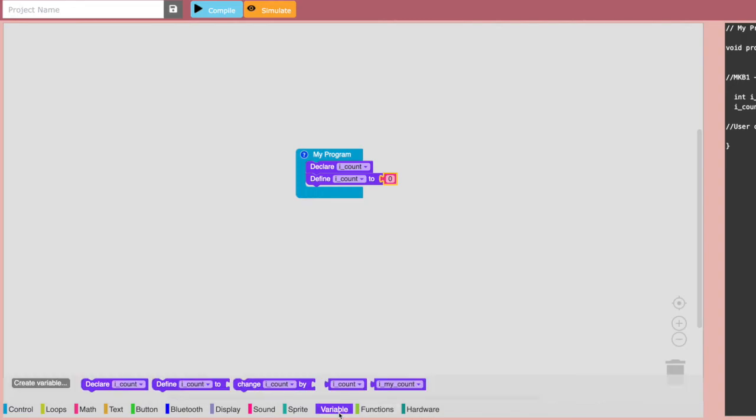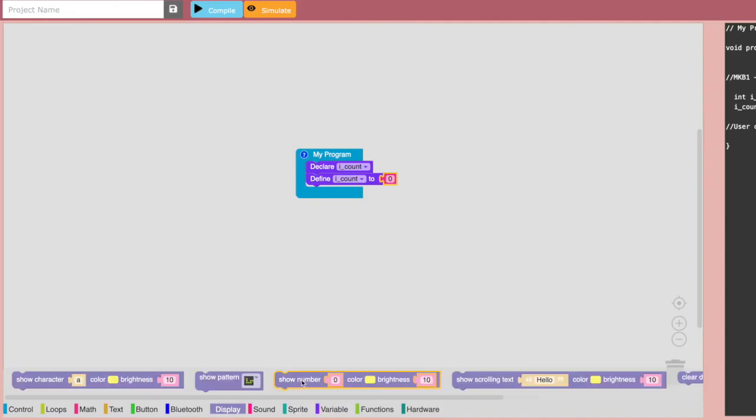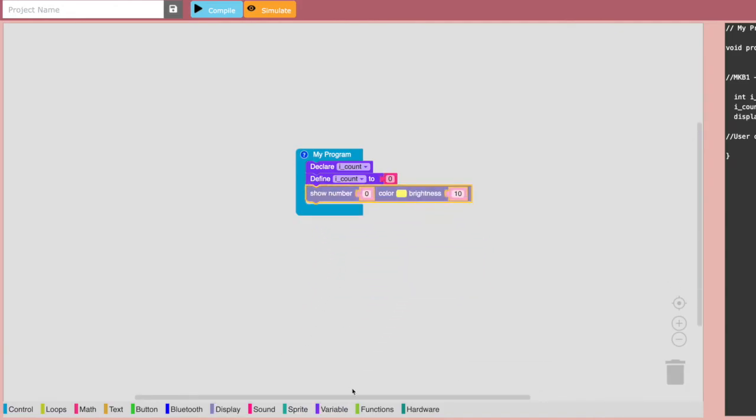Define will give the variable its starting value. Now that you have a value in your variable, you can use it by the variable value block. So go ahead and use this in loops or calculations or whatever you want.